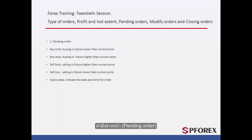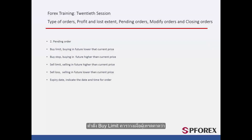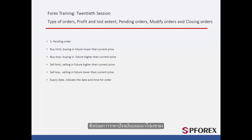Pending orders can be classified by limit and stop orders. A buy limit order should be placed when a trader speculates that the market trend will rise after it touches a certain entry price, lower than the current price on a downward trend. So a buy limit is ordered on a price lower than the current price with a forecast of an upward trend.